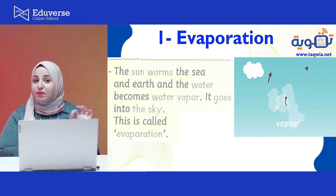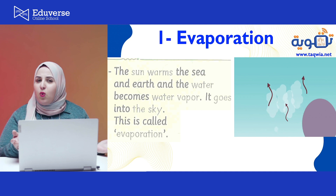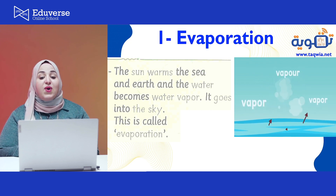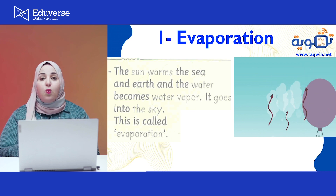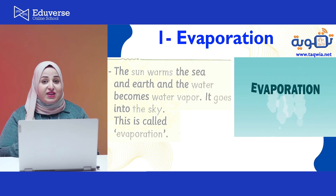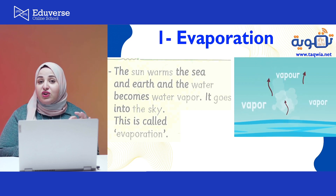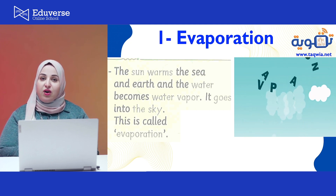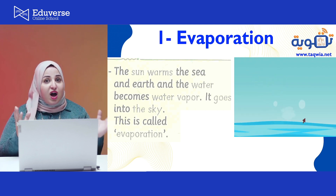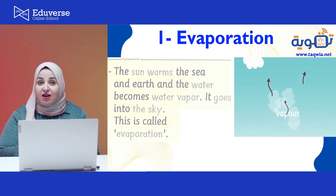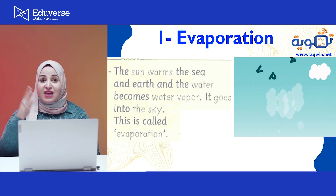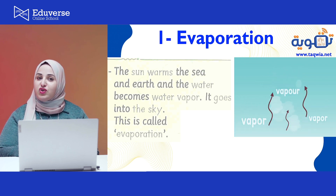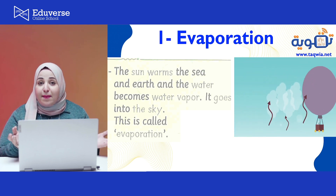The first stage is evaporation. What is evaporation? Let's look at this picture. Here you have the sun and you have the water of the ocean or the sea. The heat of the sun makes the water of the sea, the ocean, or the river very hot. When the water becomes very hot, it turns into water vapor, and the water vapor goes up to the sky. This is the evaporation process.